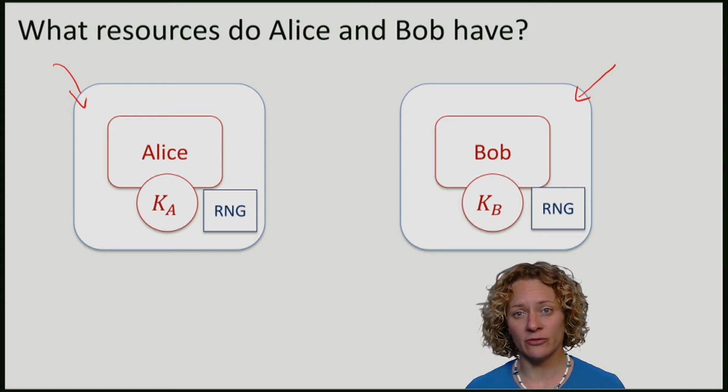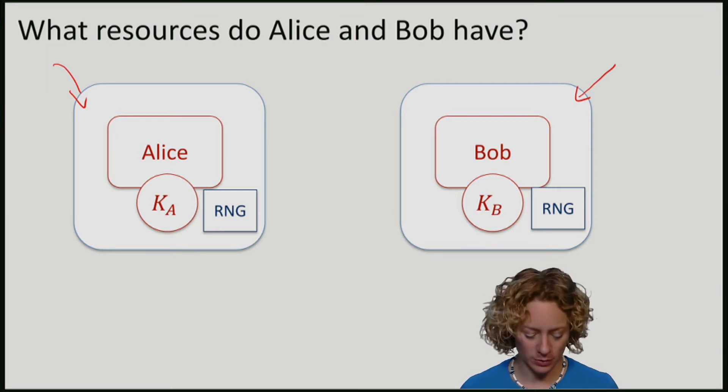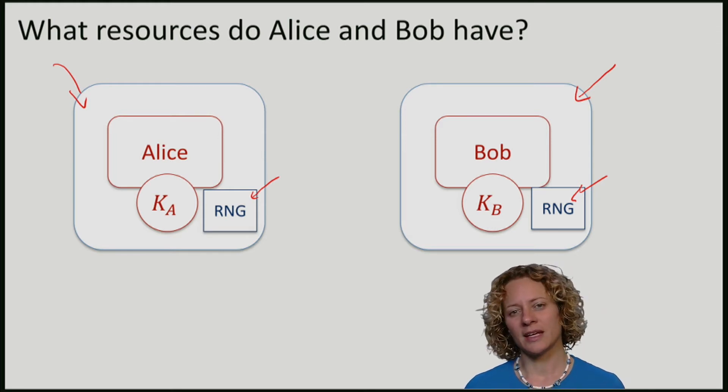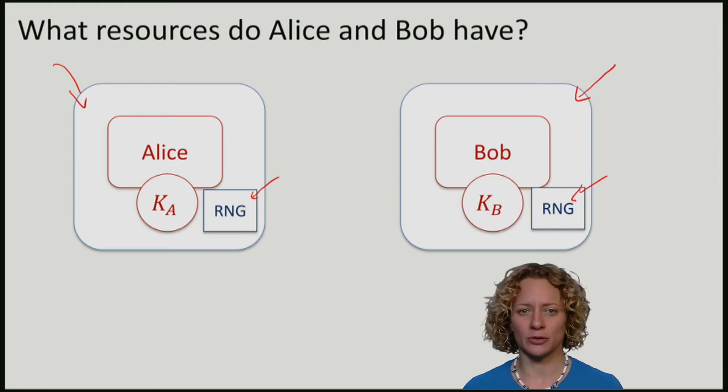Alice and Bob have full knowledge and control of their quantum devices. They also have a random number generator that generates random numbers, which are only known to them, but not to Eve. The random number generators are inside their lab, and they can use this randomness in the course of the protocol.